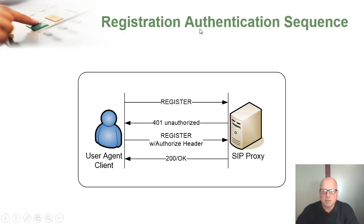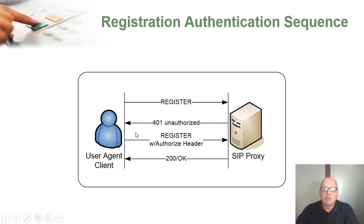Registration authentication sequence. For authenticated registrations, the phone will send a REGISTER. A 401 Unauthorized will come from the SIP proxy. Now the client will send a REGISTER again, this time with an Authorization header, and then a 200 OK.